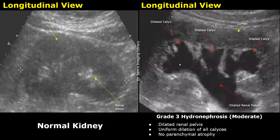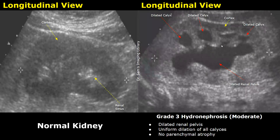There will be no parenchymal atrophy and no cortical thinning in grade 3 hydronephrosis — the cortical thickness is normal. This is another image of grade 3 hydronephrosis where the calyces in the upper, middle, and lower poles are all dilated, and the renal pelvis is also dilated.